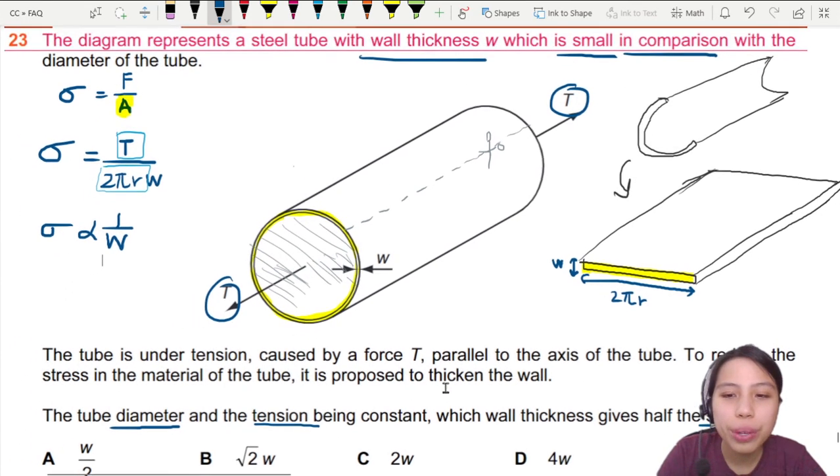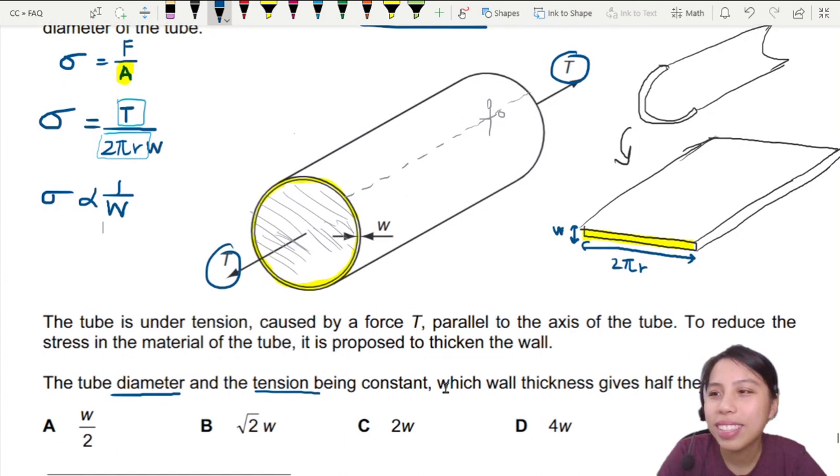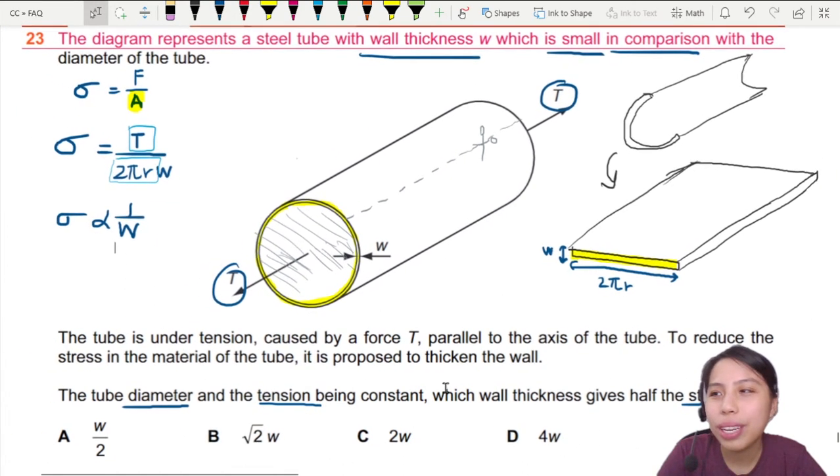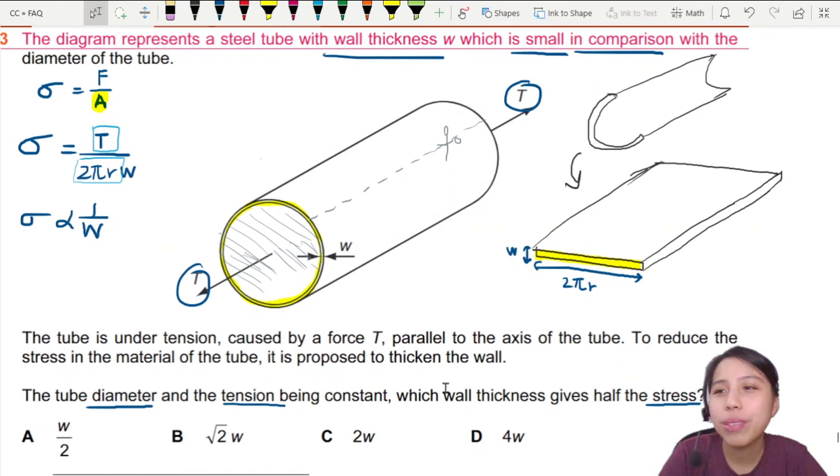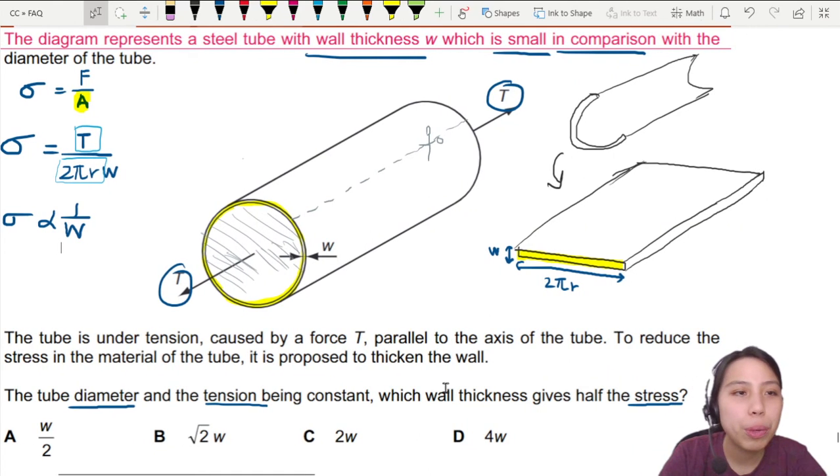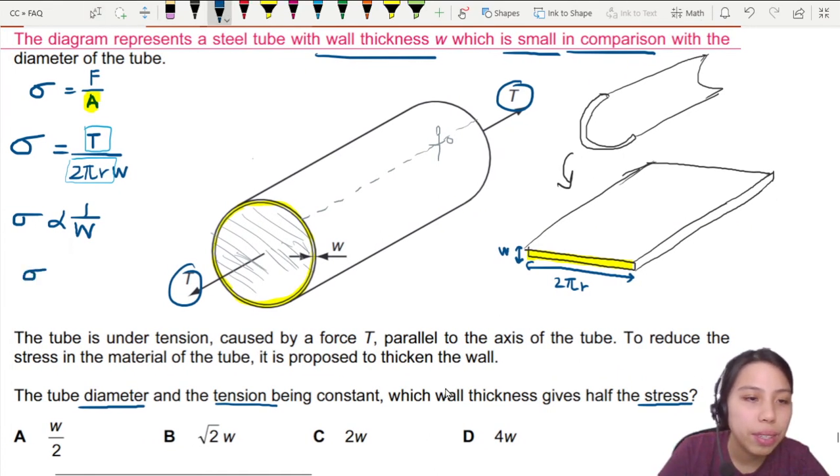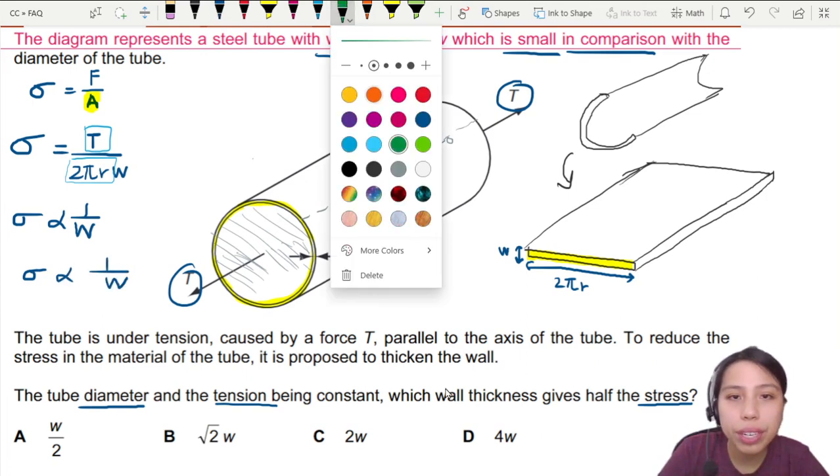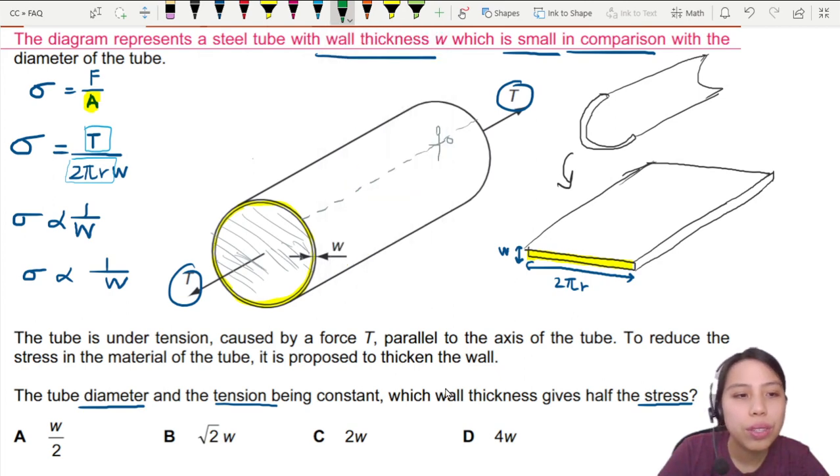So which wall will give half the stress? My shortcut method, which I like to use oftentimes, is just to use the proportionality relationship on the left side. So I'm going to redraw this 1 over w. We want half the stress, right? So this is going to be half and I multiply half on this side. Hence, if you look at the bottom now, the width has to be 2w. So the best choice here is 2w as the answer.